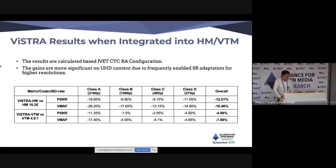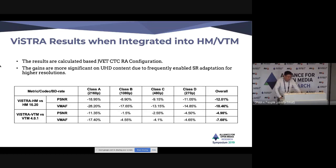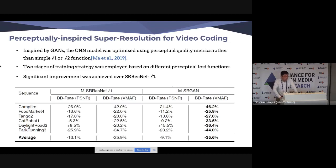Testing on JVET common test conditions, we found gains are more significant on UHD content, likely due to more frequently enabled spatial resolution adaptation for higher resolutions in the tested QP range.